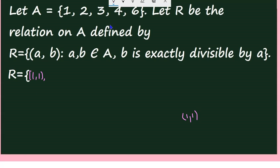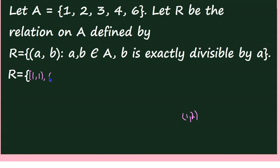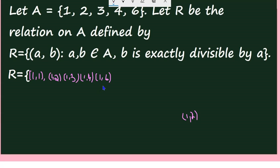Next, (1, 2): whether 2 is exactly divisible by 1? Yes. So (1, 2) is there. Similarly, (1, 3) is there since 3 is divisible by 1; (1, 4) is there; and (1, 6) is there. Note that 5 is not in set A, so we skip directly to (1, 6). So (1,1), (1,2), (1,3), (1,4), (1,6) are all in R.